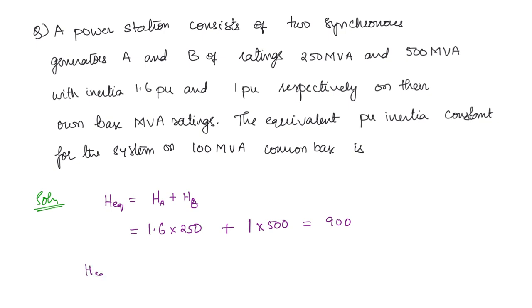The equivalent H in per unit is the actual value of 900 divided by the common base value of 100 MVA, giving H_equivalent = 9 per unit.